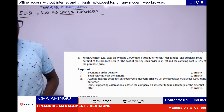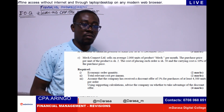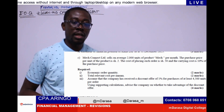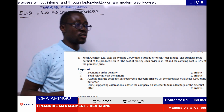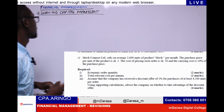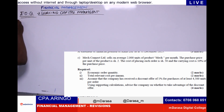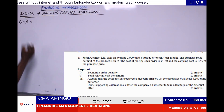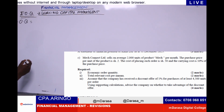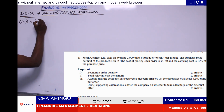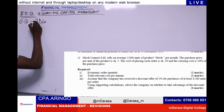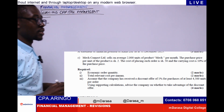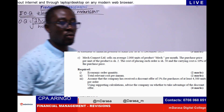Using supporting calculations, advise the company on whether to take advantage of the discount offer. When you're given such questions, being a quantitative paper, the formula will earn you a mark. Come and tell the examiner you know what you're doing by giving the formula, which will be the square root of 2BCO over HC. That is our formula for economic order quantity.